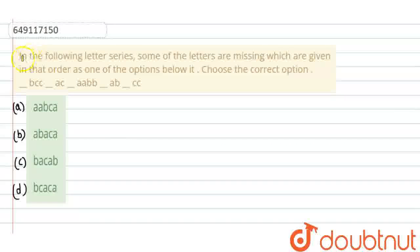Welcome to Doubtnut. Our question is: in the following letter series, some of the letters are missing, which are given in that order as one of the options below it. Choose the correct option.